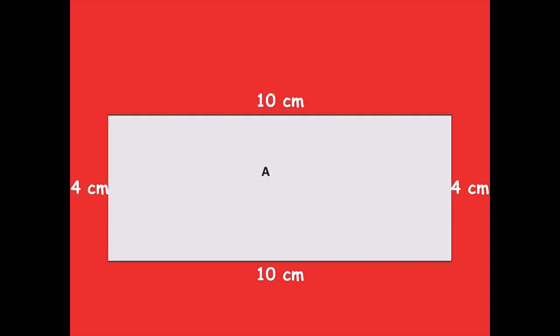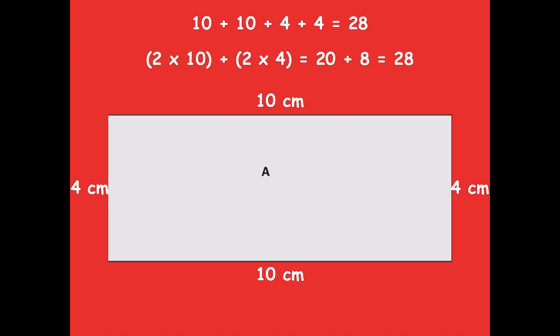Here's one equation: 10 plus 10 — my top and bottom — plus 4 plus 4 — my two sides — equals 28. Here's another way: 2 times 10 plus 2 times 4, which is 20 plus 8 equals 28. And one more way: 10 plus 4 times 2 equals 28, because 14 times 2 equals 28. So those are three different ways you could find the perimeter.